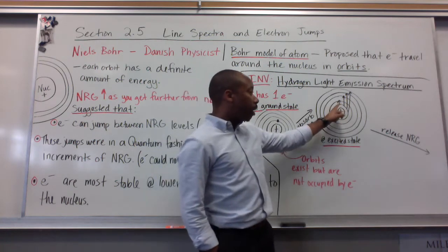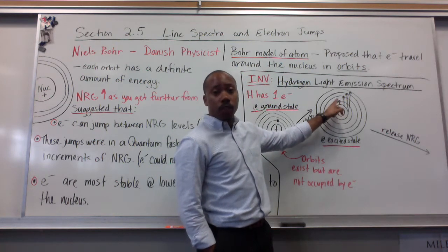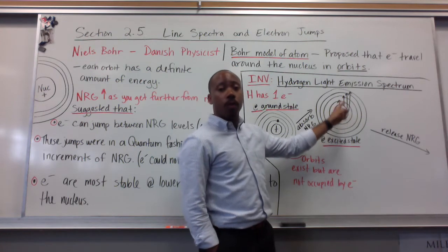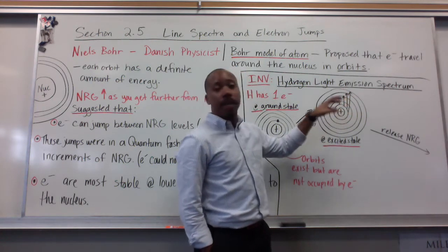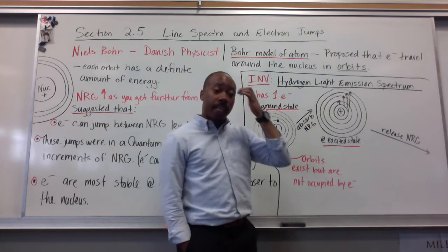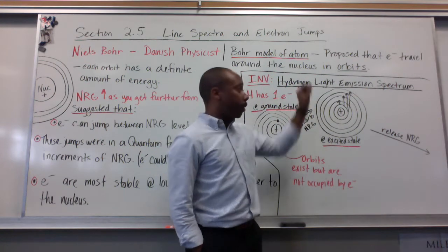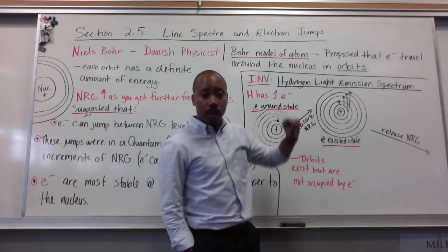This electron can jump from energy level 1 to energy level 2 and energy level 1 to 3, energy level 1 to 4, energy level 1 to 5, energy level 1 to 6, etc. It can make multiple jumps. It can go up and down, up and down, up and down to higher points.